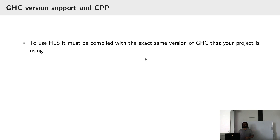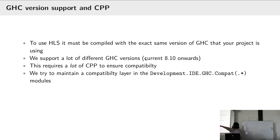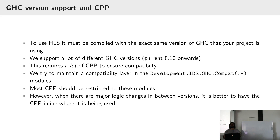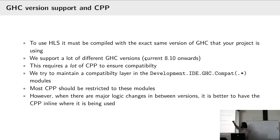We support a large number of GHC versions, all the way from 8.10 up to 9.6. HLS must be compiled with the exact same version of GHC you're using to compile your project. This means we have a lot of CPP in our code base, which is not ideal but that's what life is. We try to quarantine all of it in a single module in GHC IDE. If you're writing a plugin, please try to put GHC-version-specific code in that module. If there are major logic changes between versions you might want to have it inline, otherwise keep it in the compatibility module.